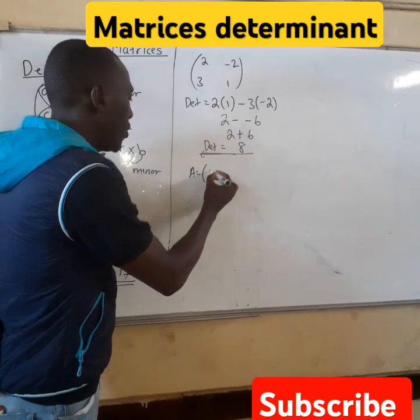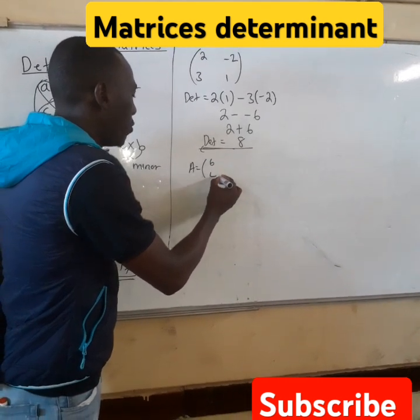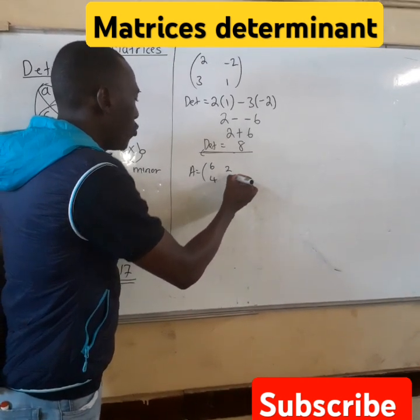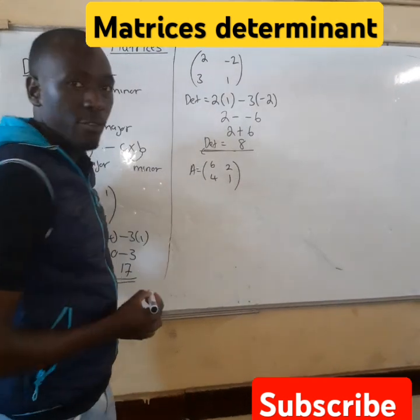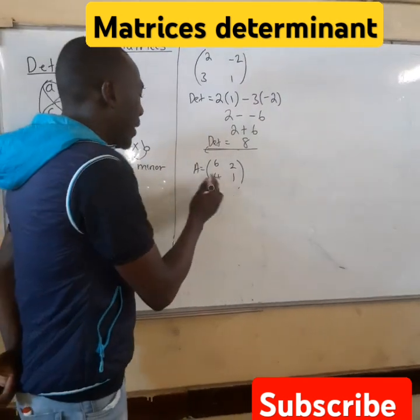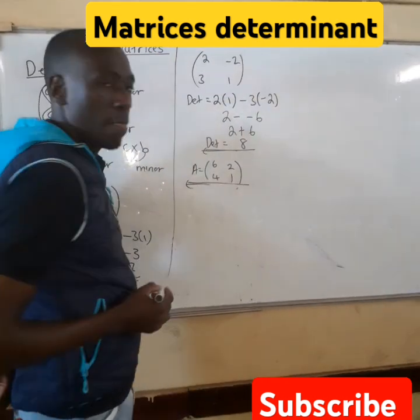I want you guys to find the determinant of matrix A: [6, 4, 2, 1]. Give your answer in the comment section. Thank you so much!